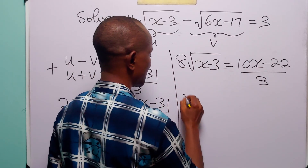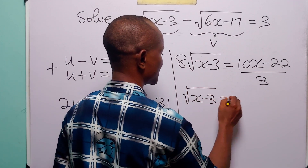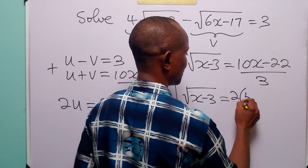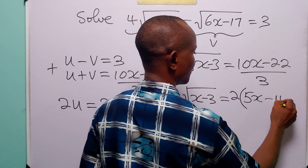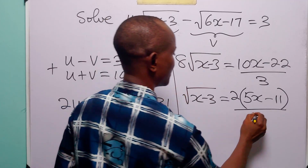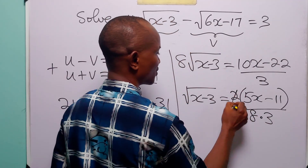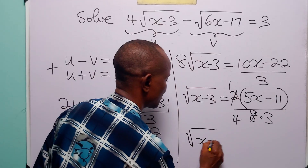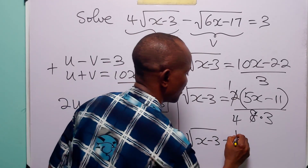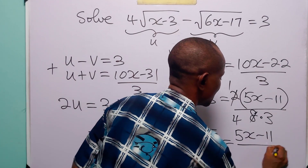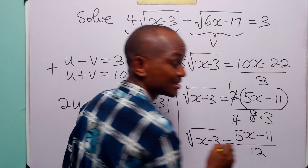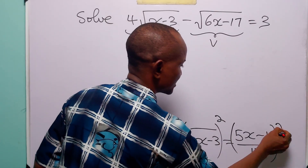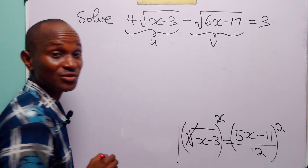Dividing both sides by 8, we get √(x-3) = (10x-22)/(3×8). We can factorize the numerator: 2(5x-11), and 2 divided into 8 gives 4, so √(x-3) = (5x-11)/12. Now we square both sides: the square root is eliminated, leaving x - 3 = (5x-11)²/144.